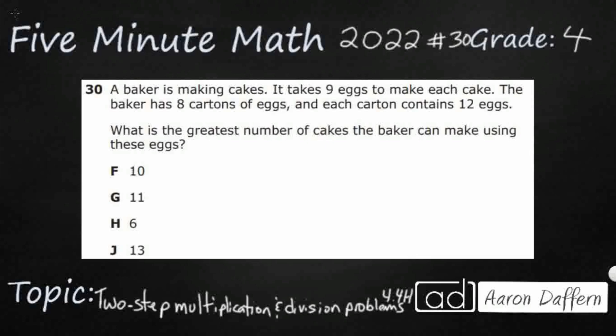A baker is making cakes. It takes nine eggs to make each cake. The baker has eight cartons of eggs and each carton contains 12 eggs. You see we've got two each's. Whenever we see each's, that lets us know that we are dealing with equal groups and so most likely we're going to be using multiplication or division or maybe even both.